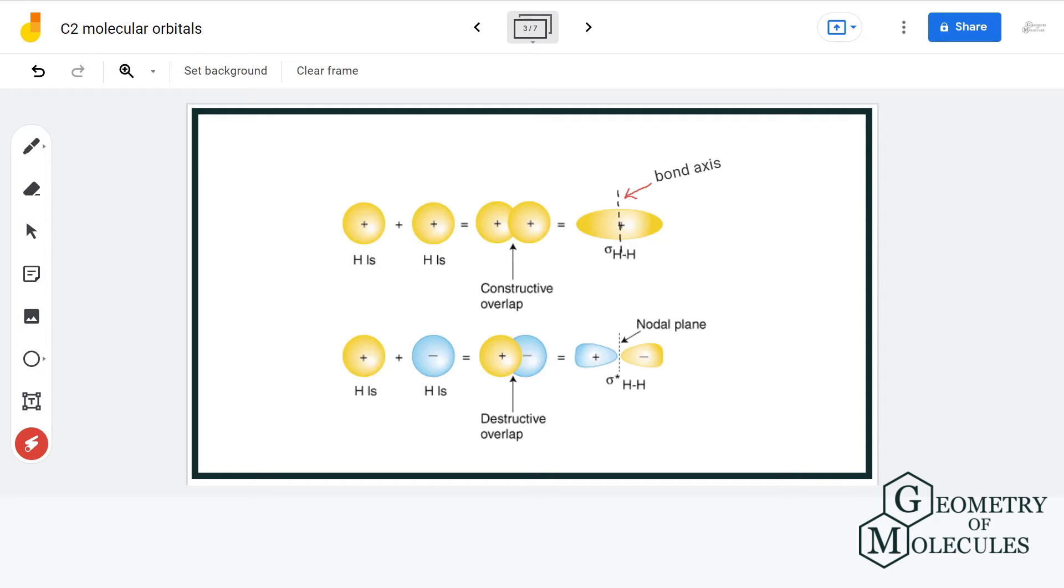This line right here is called a bond axis which is an imaginary line that connects two nuclei of atoms that have bonded with each other to form a molecule. Now when the molecular orbitals are symmetrical about the axis here, a sigma molecular orbital is formed.